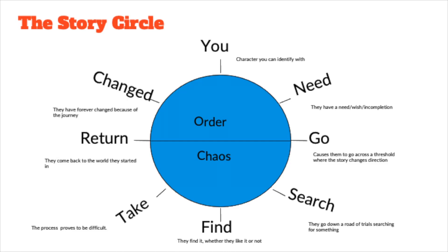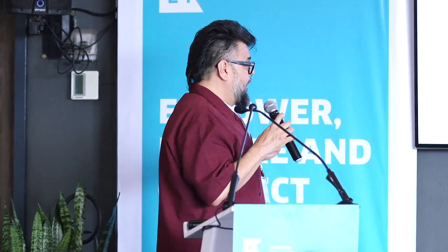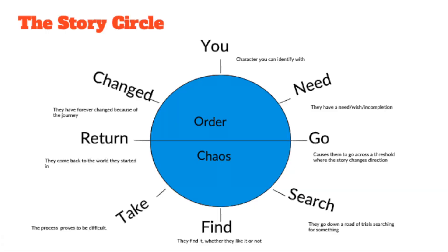TV and film writers learn the hero's journey but often simplify it for shorter formats. They reduce it to: You — the character the audience identifies with — need something, a wish. You go somewhere to find it. You search. You find it, whether or not it's what you actually wanted — because sometimes we realize the goal wasn't what we wanted. Sometimes you have to take it anyway. Then you return home changed, back to where you started, having gone through the journey.